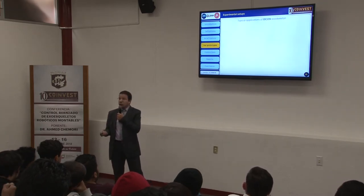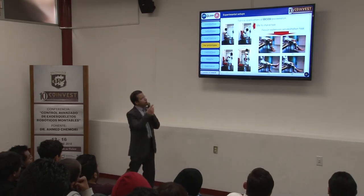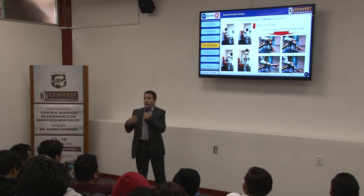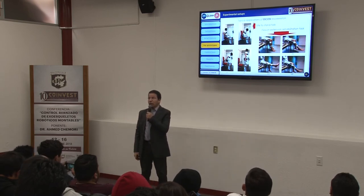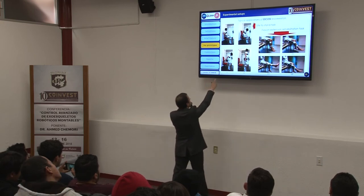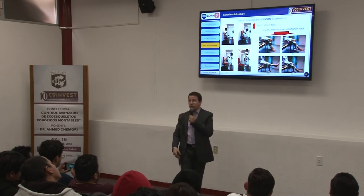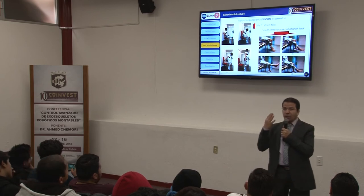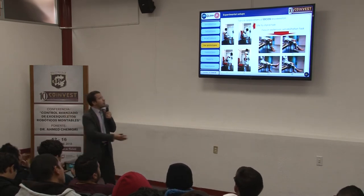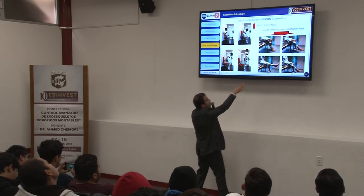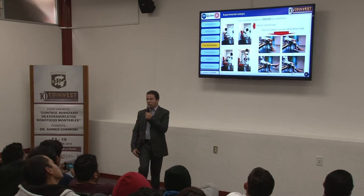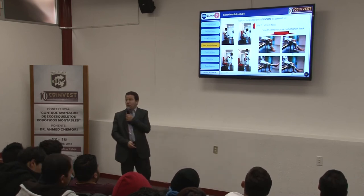Typical applications for this exoskeleton include rehabilitation. One task is sit-to-stand: the person seated wants to reach an upright position but lacks sufficient muscle strength. We ask the human to wear this exoskeleton and use EMG sensors to measure muscle activity, then estimate the additional torque needed and supplement it using the actuator. Another application is flexion-extension rehabilitation: repeating this periodic motion to help the human strengthen and rehabilitate the leg.